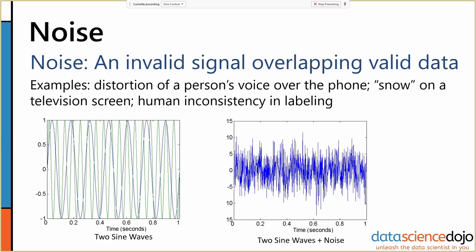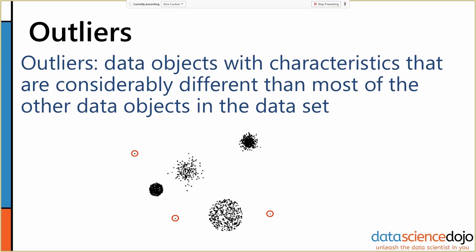Outliers often look like noise at first — they're data objects with characteristics considerably different from most other objects in the data set. In a two-dimensional graph showing four nicely defined clusters, outliers are three points hanging out in the middle of nowhere, far away from all the other data. The key distinction between outliers and noise is that outliers are actually valid values — the data was collected properly and is clean, but the object falls outside the normal range for some reason.